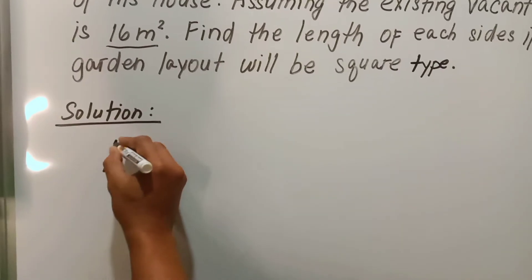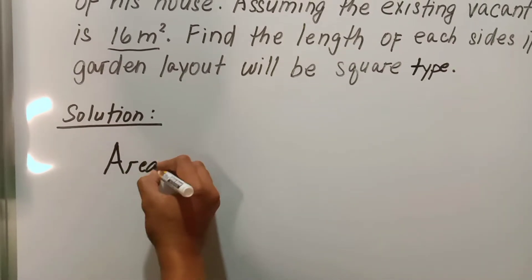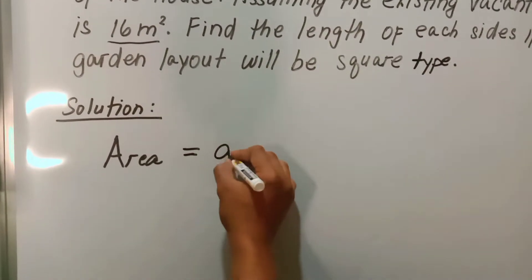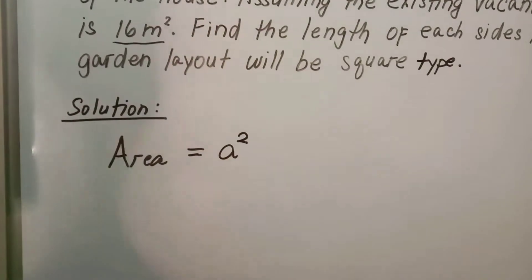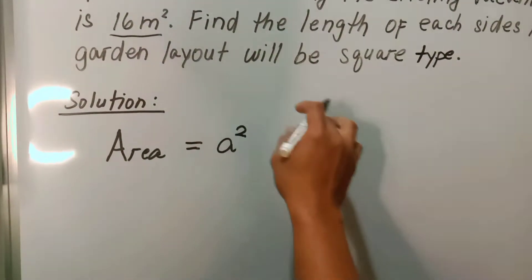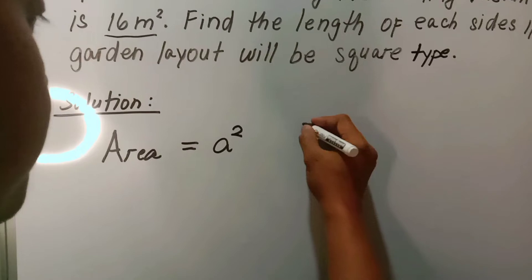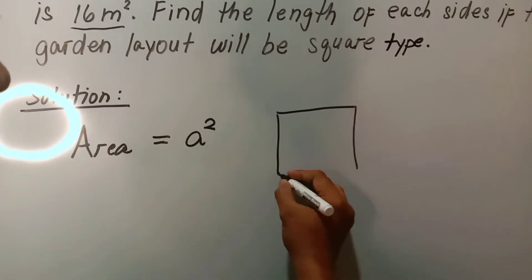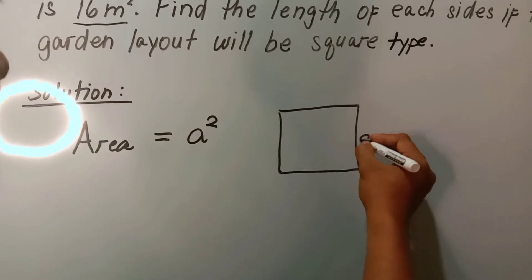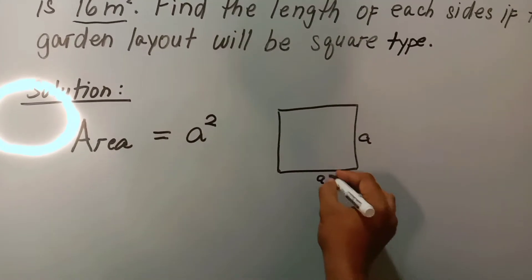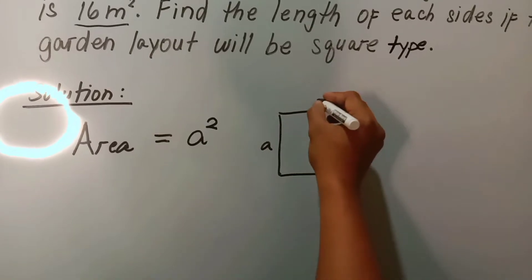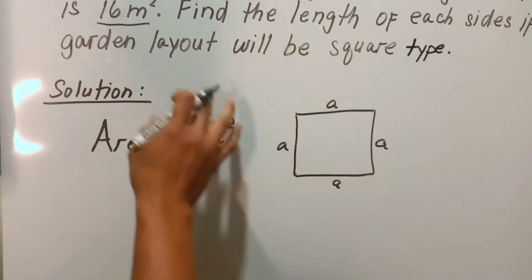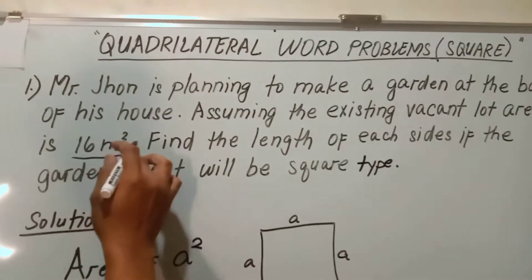As we all know, the area of a square is equal to a squared. Now if the garden layout of Mr. John will be square type, all the sides are equal. All the lengths of the sides are equal. Since the area of the existing lot is given, which is 16 square meters.